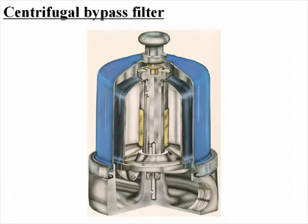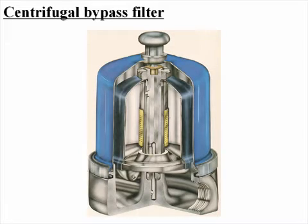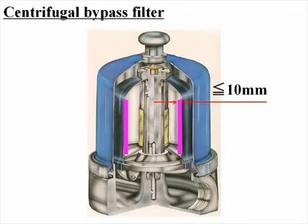The centrifugal bypass filter is used to moderate lube oil contamination during engine operation. Disassemble and clean the bypass filter when the sludge depth is still within 10 millimeters. The cleaning interval is about every 100 to 200 hours.